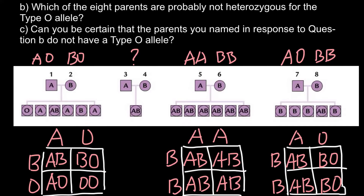As for the second family, there are different possible genotype combinations: male AA and female BB; male AA and female BO; male AO and female BB; or male AO and female BO. We simply do not have enough statistical information to determine which is correct.